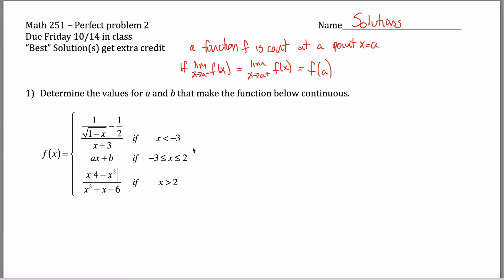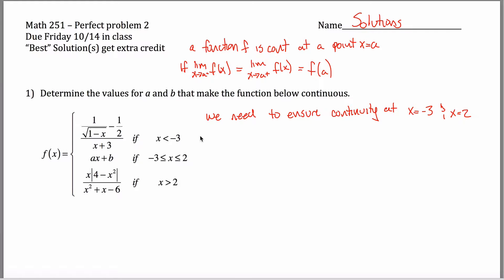When we're dealing with piecewise functions, the only values of a we have to consider are where we switch from one rule to another. We need to ensure continuity at x = -3 and x = 2. At -3, I switch from this rule to this rule, and at positive 2, I switch from this rule to this rule.